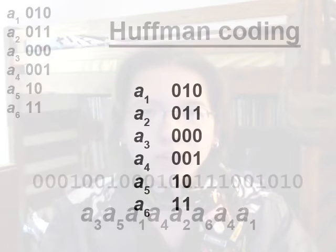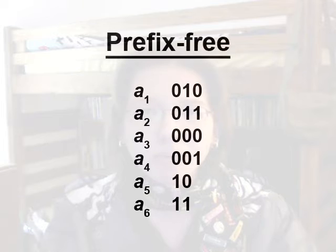And we can keep doing this until we've decoded the entire message. Now, there's an important feature of Huffman coding. It's prefix-free, which means none of the codewords are a prefix of any other codewords. So none of the codewords start with any other codeword.